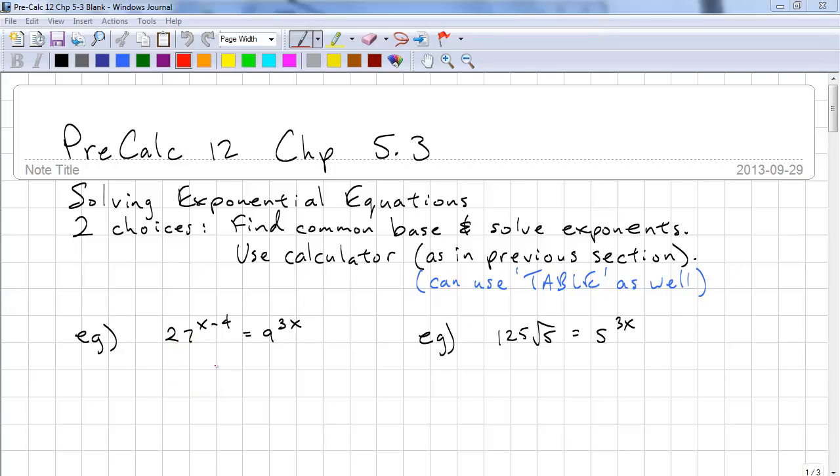So I'm going to show you how to do this algebraically. We have 27 raised to the power of x minus 4 equals 9 raised to the power of 3x. We need to find a common base. So 27 is 3 to the power of 3 raised to the power of x minus 4. And 9 is 3 to the power of 2.